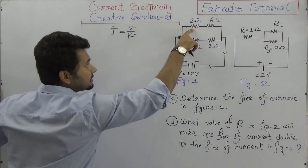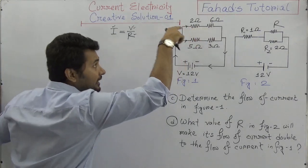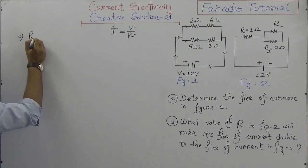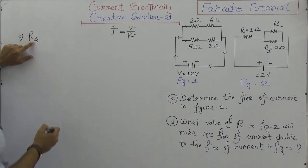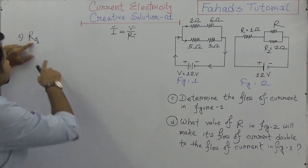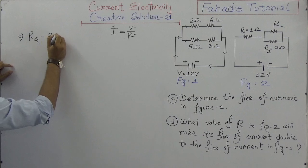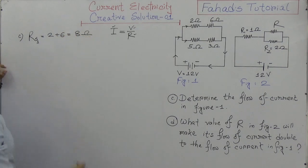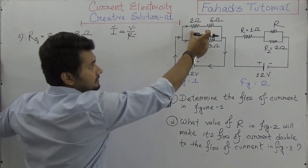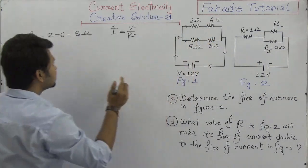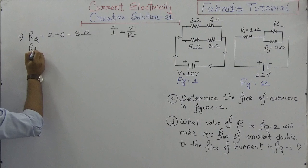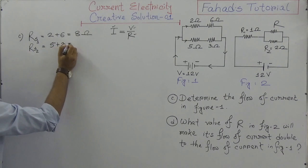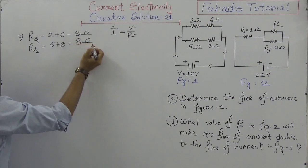Since the first group is in series, the equivalent resistance RS1 equals two plus six, which is eight ohms. Similarly, the second group is also in series, so RS2 equals five plus three ohms, which is also eight ohms.